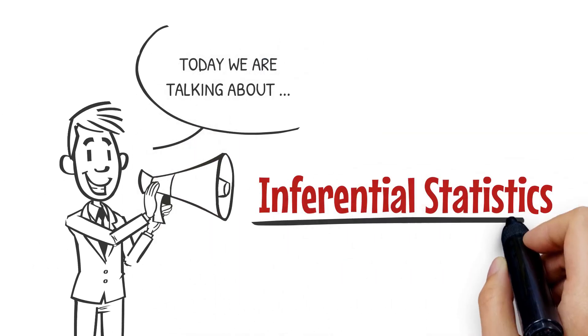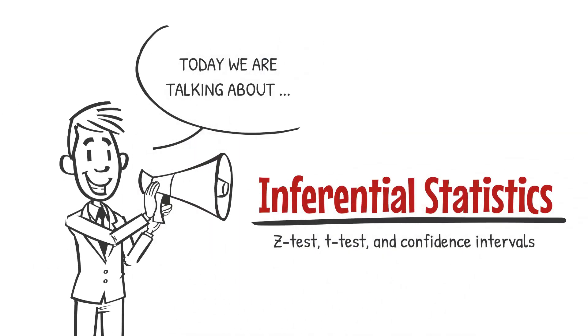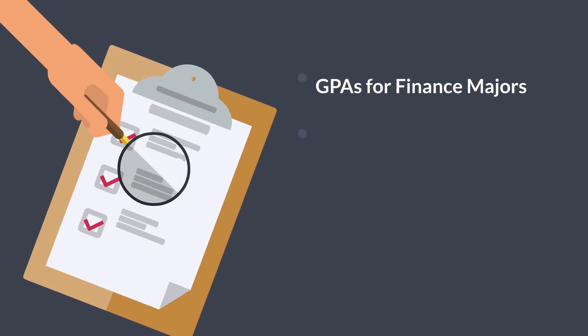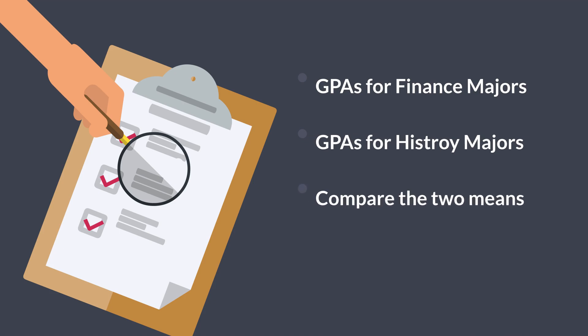To do that, we can set up an experiment where we find the mean GPA for finance majors and the mean GPA for history majors, and then use test statistics to compare the two means.